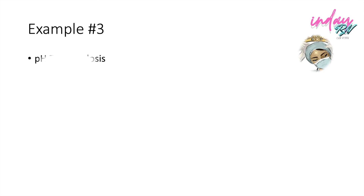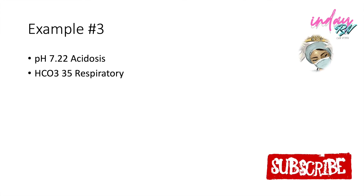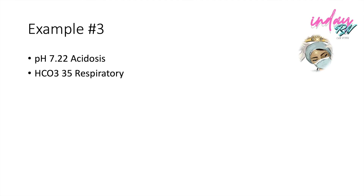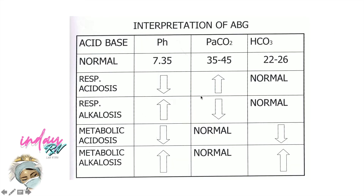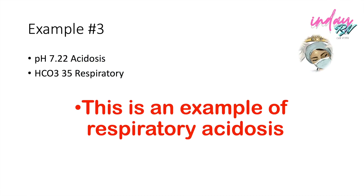In the third example, if you only have partial data in the question — for example, pH is 7.22, this means it's acidosis — while the HCO3 is 35, and you don't have any data for the respiratory. Consider it to be respiratory, because if the pH is low, HCO3 should also be low for it to be metabolic. However, if you don't have any PCO2 variable in the question, conclude that the answer will be on the respiratory side, because they are in the opposite direction. In that case, the CO2 is acidosis, therefore the result is respiratory acidosis.